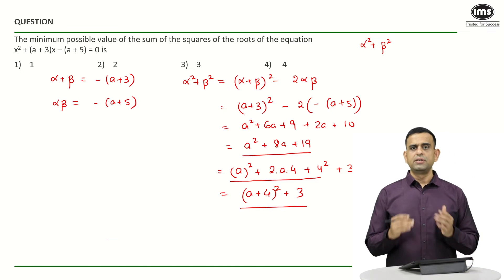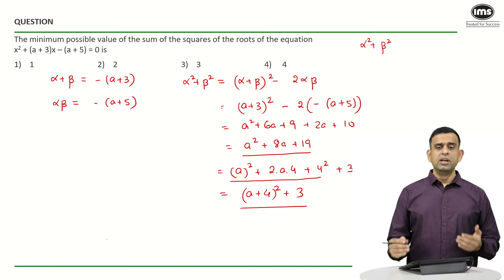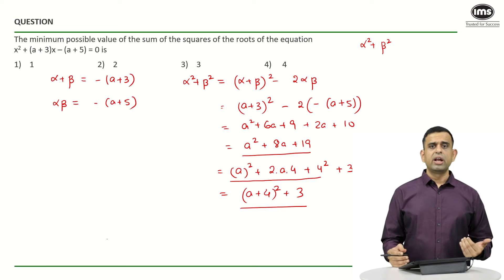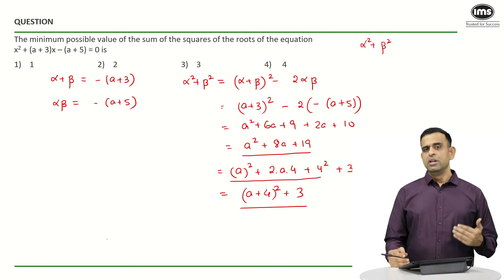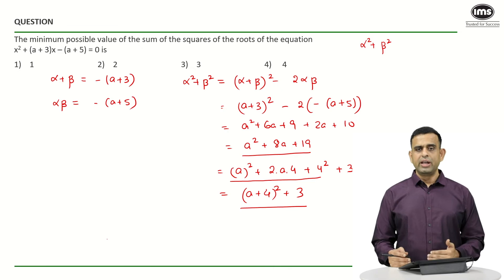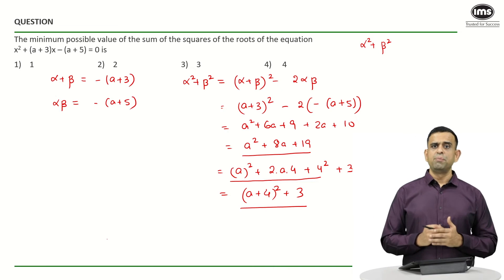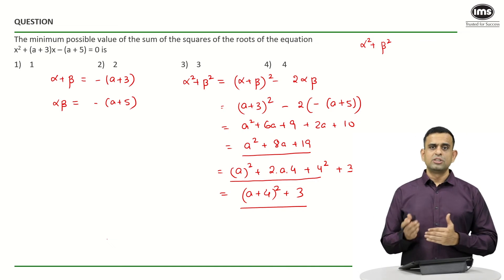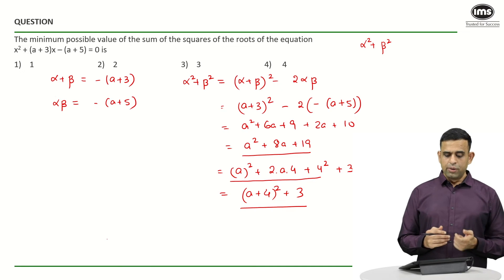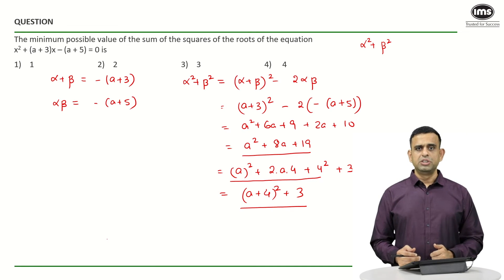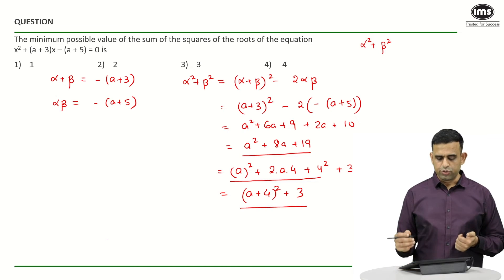If you look at the expression 3 plus a perfect square quantity, a square quantity can never become negative. So 3 plus perfect square quantity is minimum going to be equal to 3, and that can only happen when the square term becomes equal to 0. And for the square term to become equal to 0, my value of a+4 has to be 0, or one can say a needs to be equal to -4.